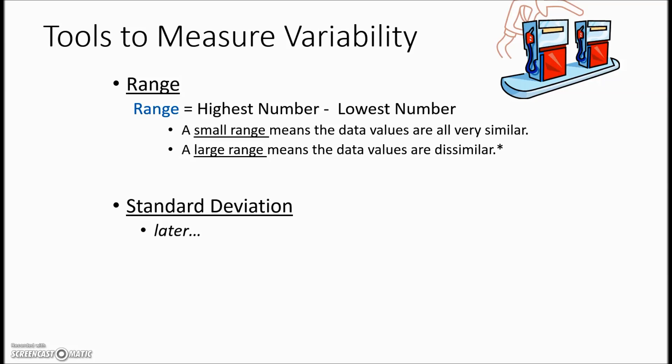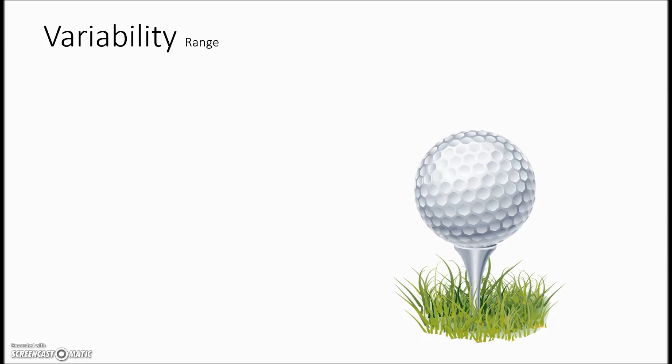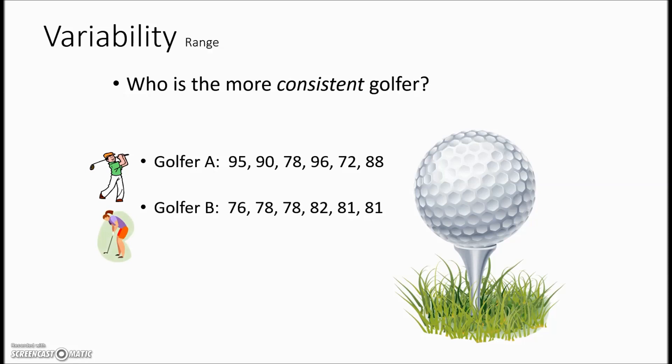A further measure of variability is standard deviation and we'll take a look at that in a bit. Here's an example of calculating variability. The question is who is the more consistent golfer. We have scores for both and we'll use the range value to make that decision. On golfer A, the high score is 96, low of 72 with a difference of 24 for the range value.